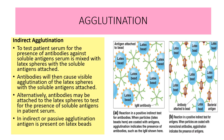The second type of agglutination is indirect agglutination. To test patient serum for the presence of antibodies against soluble antigen, the serum is mixed with latex spheres with the soluble antigen attached. In indirect agglutination, latex beads are used — antigens are impregnated on the latex bead — and then the reaction takes place. Antibodies will then cause visible agglutination of the latex sphere with the soluble antigen attached.